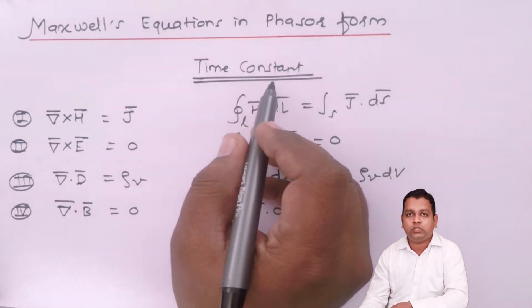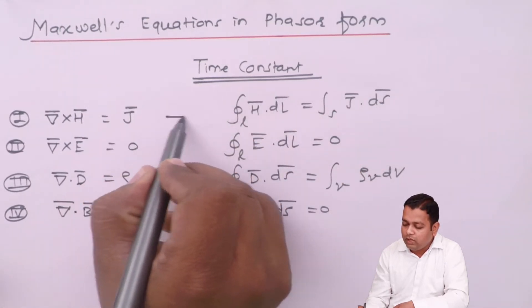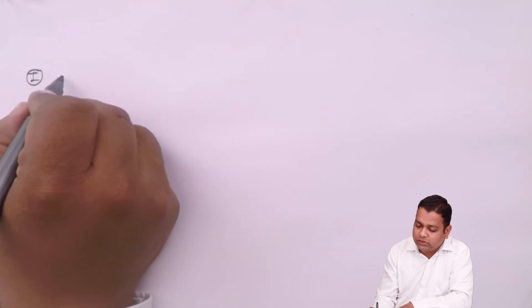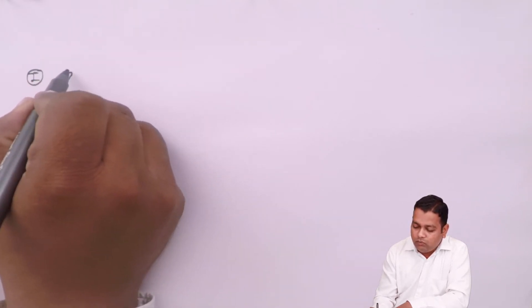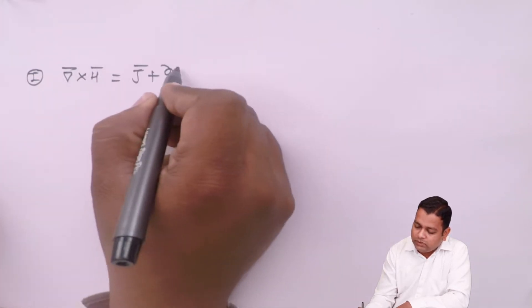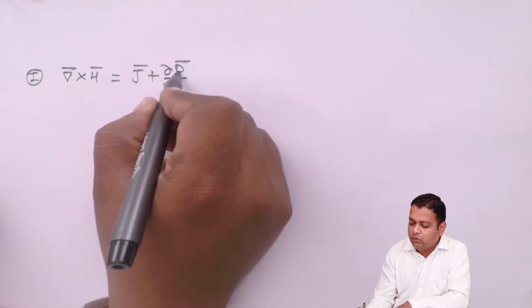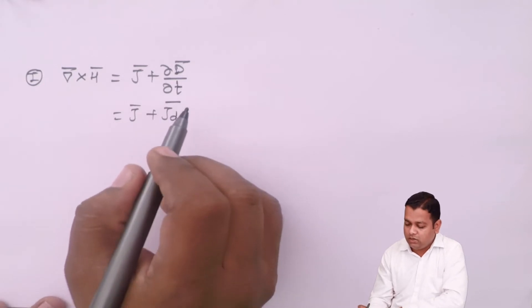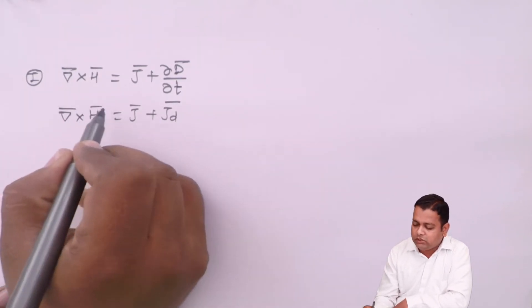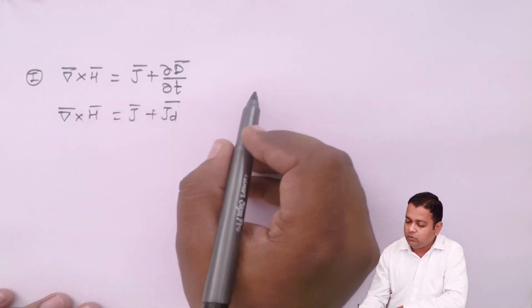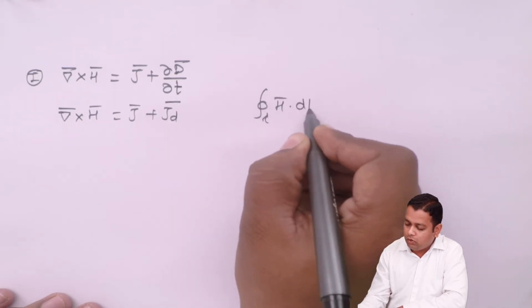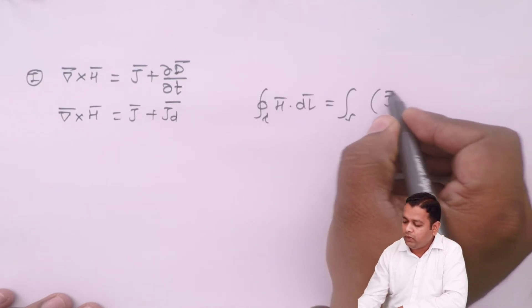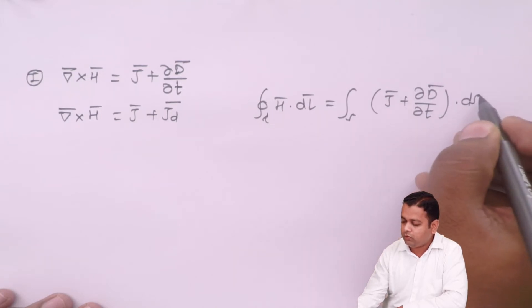Switching from time constant to time varying fields, we had to modify equations one and two. For the first equation, Del cross H̄ = J̄ was no longer sufficient; we add one more term to get Del cross H̄ = J̄ + ∂D̄/∂t, where ∂D̄/∂t is the time derivative of electric flux density, also called the displacement current density J_D. In integral form, the closed line integral of H̄·dL̄ equals the surface integral of (J̄ + ∂D̄/∂t)·dS̄.